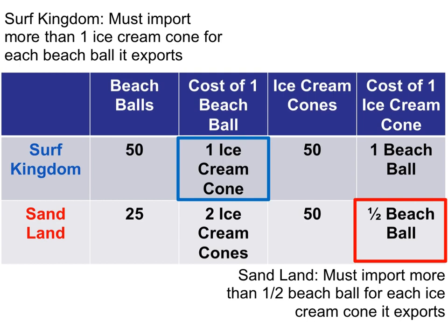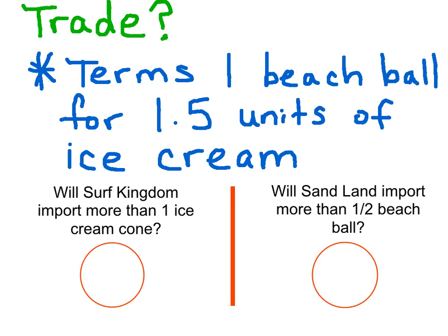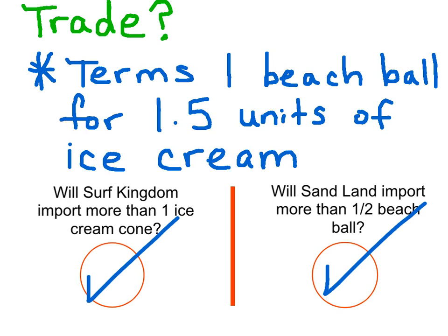In order for these two economies to trade with one another, they both must benefit. Surf Kingdom must receive more than one ice cream cone for every beach ball that it exports, and Sandland wants to import more than half a beach ball for every ice cream cone it exports. Suppose the terms of trade are one beach ball for one and a half units of ice cream. Will this trade occur? Surf Kingdom must import more than one ice cream cone for each beach ball that it exports — here they're going to receive one and a half units of ice cream, so yes, for Surf Kingdom it's a go. Will Sandland import more than half a beach ball for each ice cream cone that it exports? The answer is also yes — they're going to receive two-thirds of a beach ball for each ice cream cone that it exports.